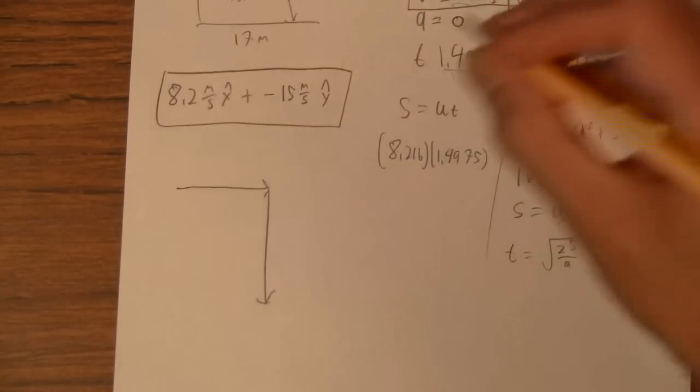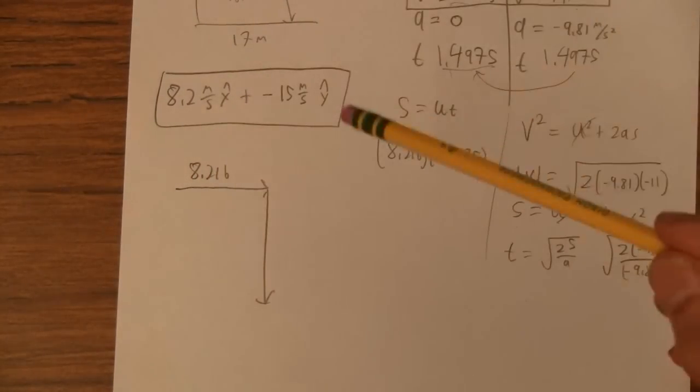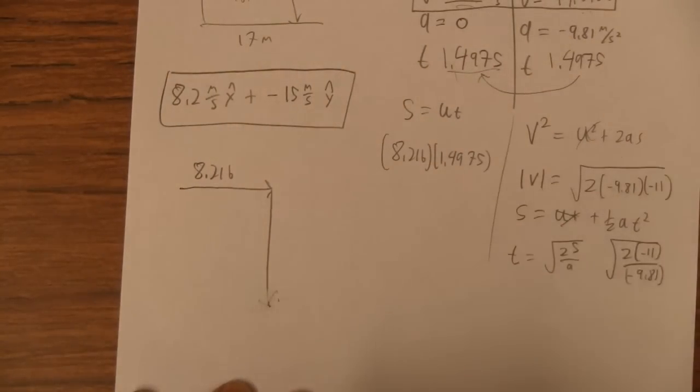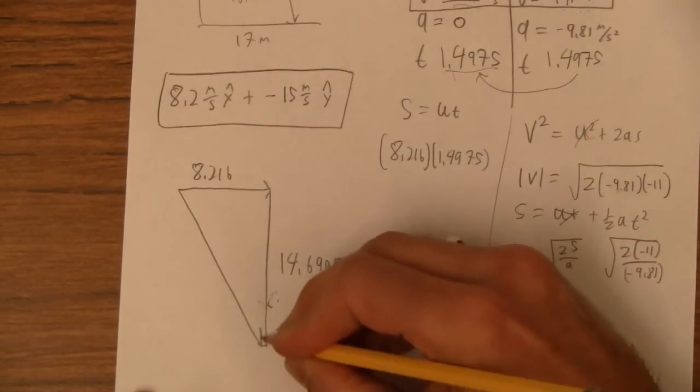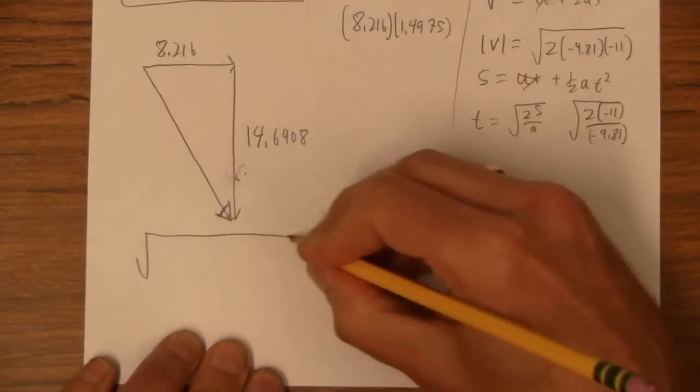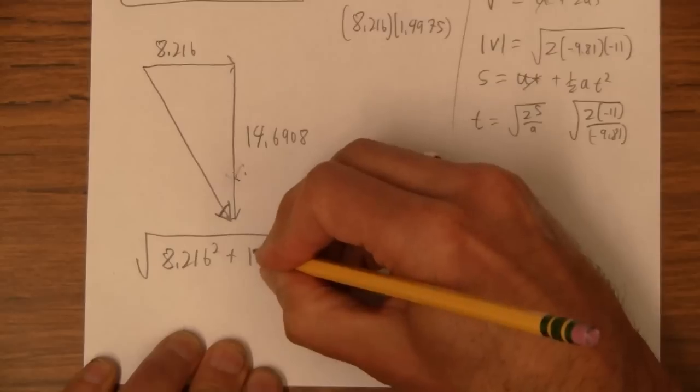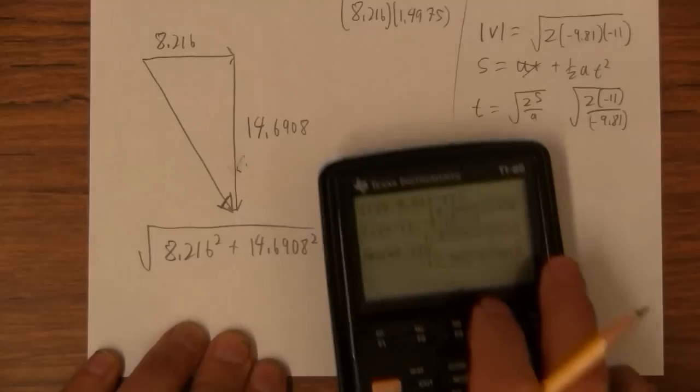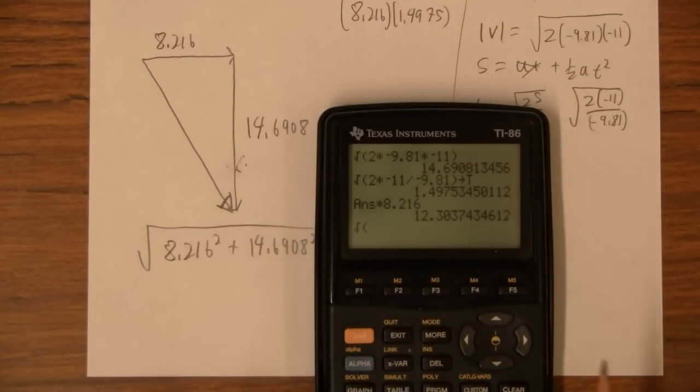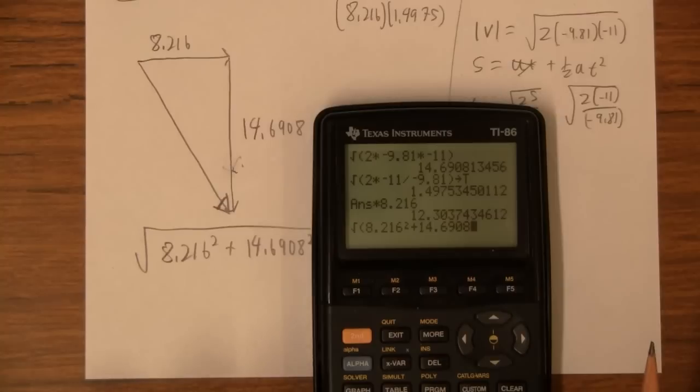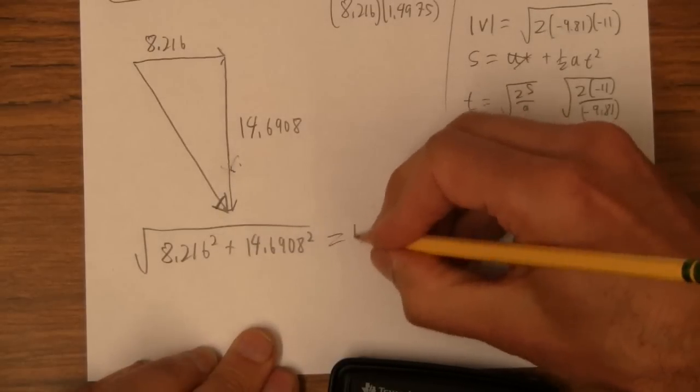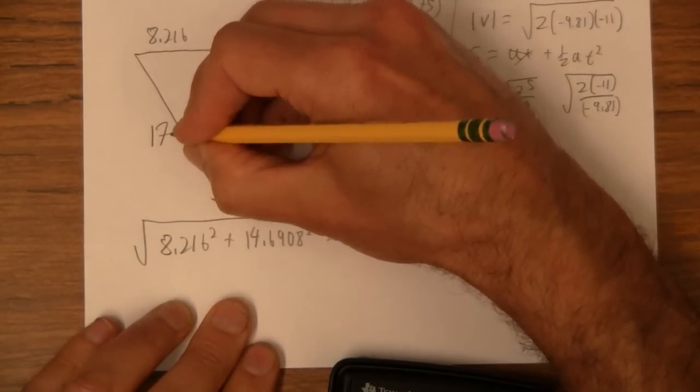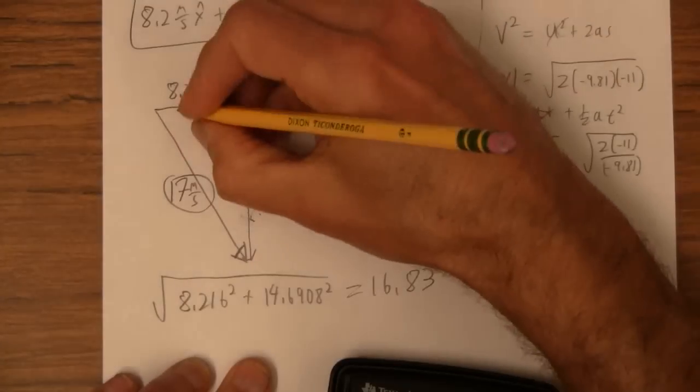This is 14.6908. And we can now find a magnitude for that guy. Square root of 8.216 squared plus 14.6908 squared. So we'd have to say with sig figs that's 17 meters per second with two sig figs. And then let's find this angle right there.